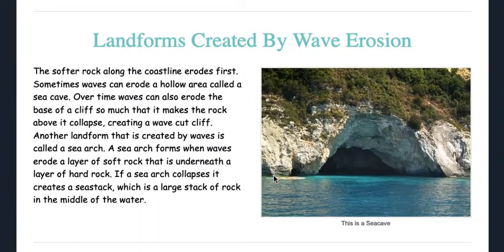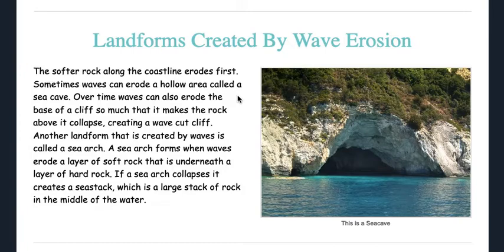Landforms created by wave erosion: the softer rock along the coastline erodes first. Sometimes the waves can erode a hollow area called a sea cave. Over time, waves can also erode the base of a cliff so much that it makes the rock above it collapse, creating a wave-cut cliff.